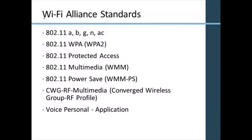The Wi-Fi Alliance has been around since 1999, changing its name in 2002. They verify that devices meet certain standards. As a quick review, here are some of the 802.11 standards: 802.11a operates at 5 GHz with data speeds up to 54 Mbps, using both the frequency and different encoding methods.